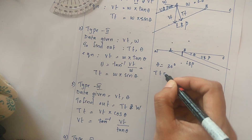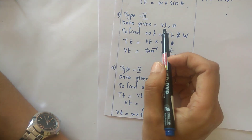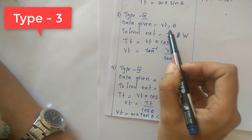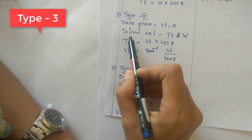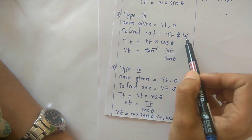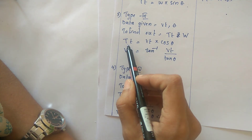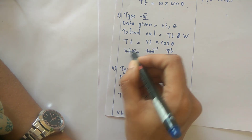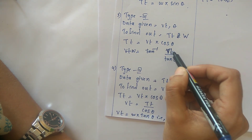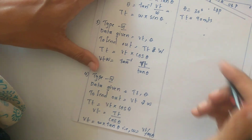Now moving to Type 3. In this case, vertical thickness and theta are given, and you have to find out true thickness and width of outcrop. The mathematical equations are: true thickness TT equals VT into cos theta, and width of outcrop W equals VT divided by tan theta. Using these equations you can find the missing values.